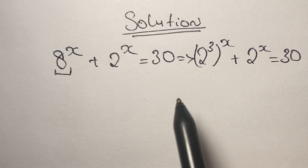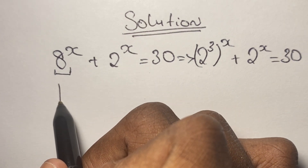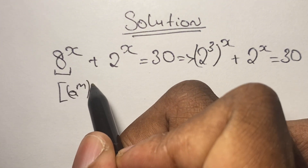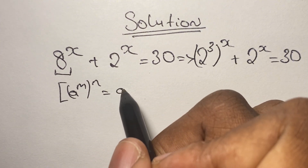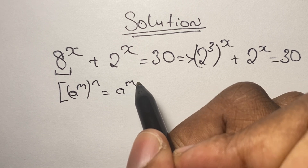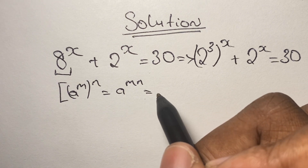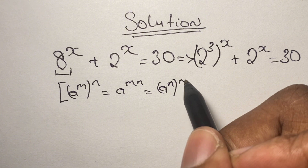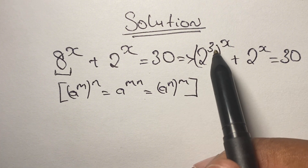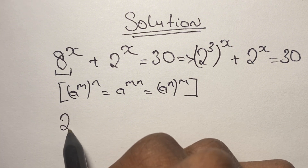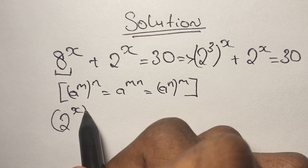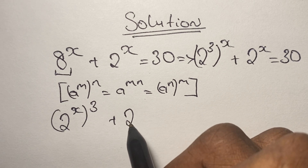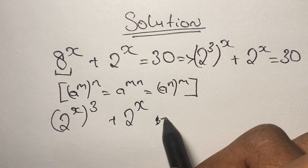Now we apply our laws of indices. We know that 8 to the power of m, in brackets powered by n, is the same as 8 to the power of m times n, which can also be written as 8 to the power of n in brackets powered by m. Using this, we express 2 to the power of 3 in brackets powered by x as 2 to the power of x in brackets powered by 3, plus 2 to the power of x, equal to 30.